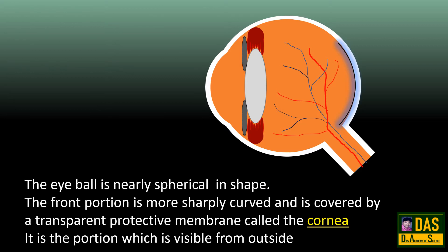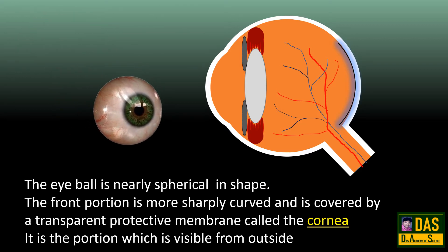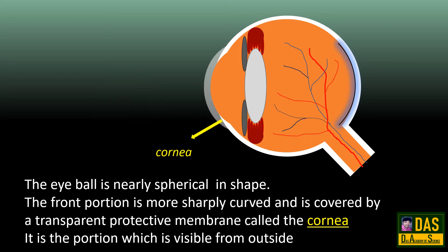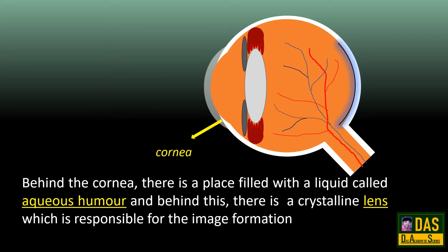The eyeball is nearly spherical in shape. The front portion is more sharply curved and is covered by a transparent protective membrane called the cornea — it is the portion visible from outside. Behind the cornea, there is a space filled with a liquid called aqueous humor, and behind this is a crystalline lens which is responsible for image formation.